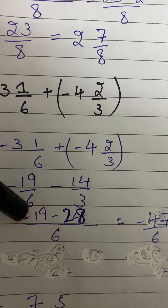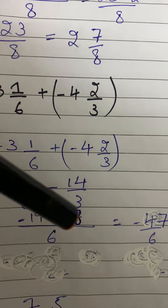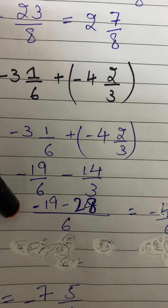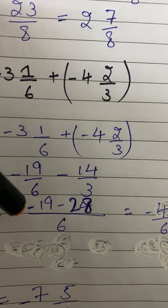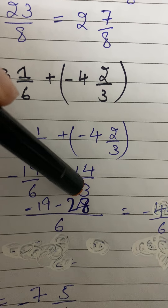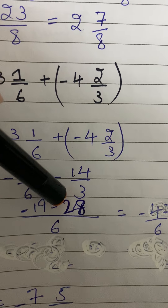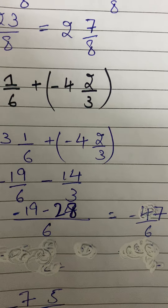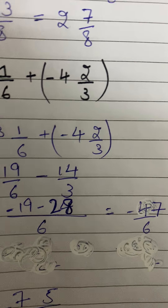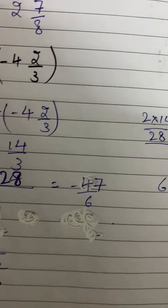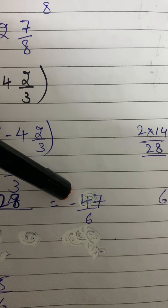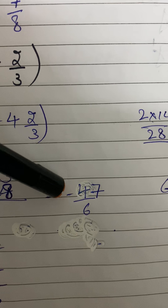6 ones are 6, so 1 times 19 gives 19 — write the negative sign as well. Then 3 twos are 6, and 2 times 14 gives 28. We have minus 19 minus 28; minus minus gives plus, so we add them, but keep the negative sign since both values are negative. Minus 19 minus 28 equals minus 47.